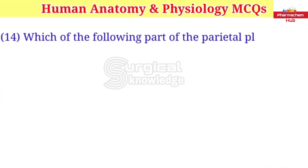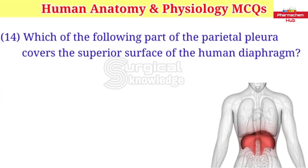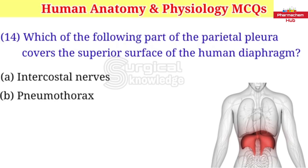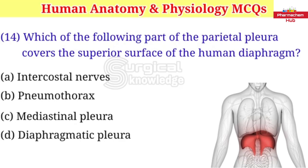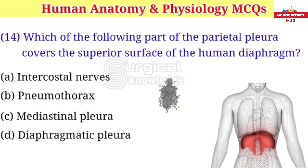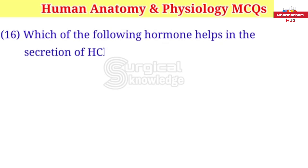Which of the following part of the parietal pleura covers the superior surface of the human diaphragm? A. Intercostal nerves B. Pneumothorax C. Mediastinal pleura D. Diaphragmatic pleura. Right answer is diaphragmatic pleura.